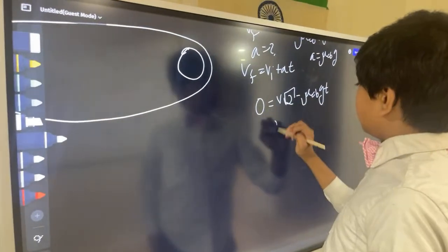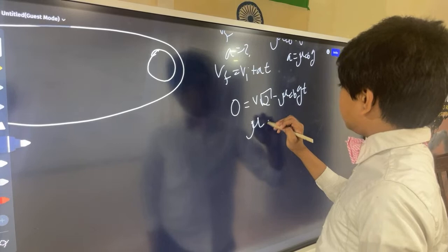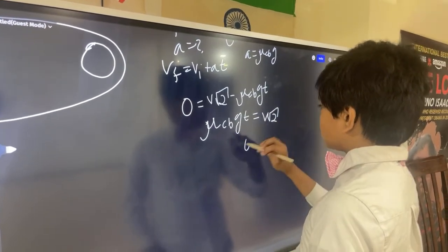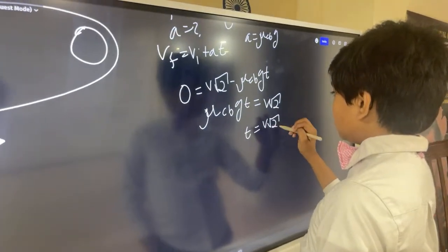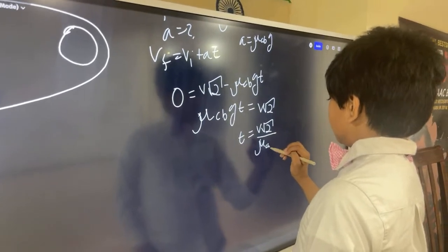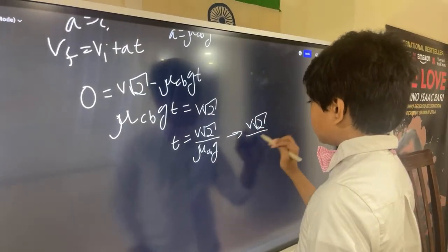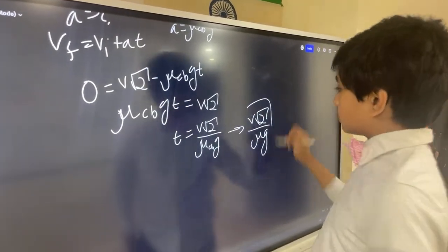We get mu Cb, G, T equals V root 2 over mu Cb, G. Or, V root 2 over mu G, which is the answer. That's it.